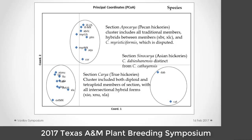If we look at the species and do a principal coordinate analysis, Davishonensis and Cathayensis over on the far right are more widely separated as species than even U.S. pecan and Mexican pecan across all the range of our U.S. species. The only outlier is that Myristiciformis is grouping with Apocaria — and Myristiciformis has actually been put into different sections by different botanists over time. The hybrids between pecan and Ovata and Nussbaumeri tend to clump with section Carya.